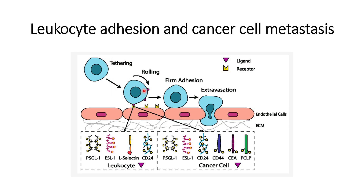After tethering, the speed of the leukocytes needs to further slow down, and that is done with the help of E-selectin. There are two ligands that mainly play a role in E-selectin: one is ESL-1 and another is CD44. ESL-1 changes the leukocytes from the tethering state to the rolling state, and CD44 controls the rolling speed by reducing it.